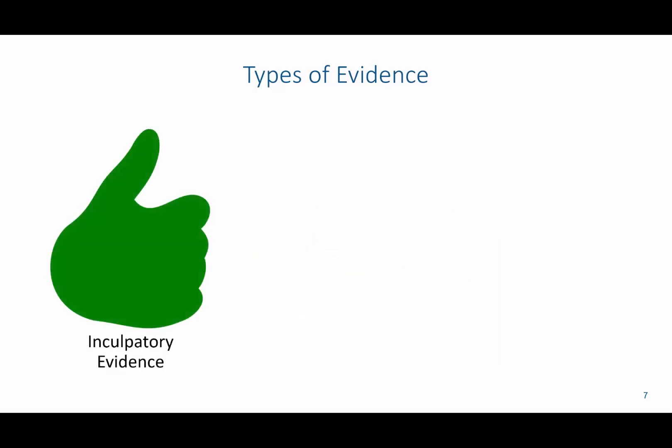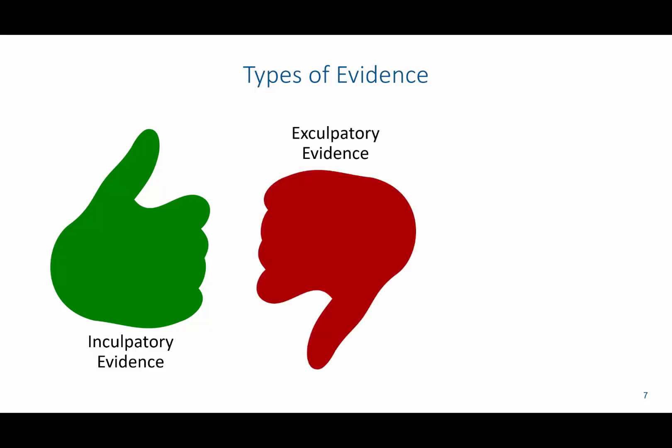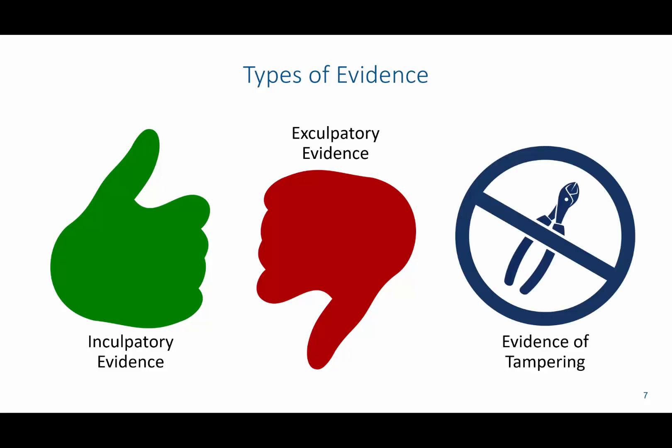There are several types of evidence to consider. The first is inculpatory evidence, which affirms a theory — any evidence that supports our theory of what happened. We also have exculpatory evidence, which refutes our theory — anything that says the sequence of events did not follow the pattern we initially anticipated. And there is evidence of tampering, which could lead to our evidence being inadmissible in court entirely.